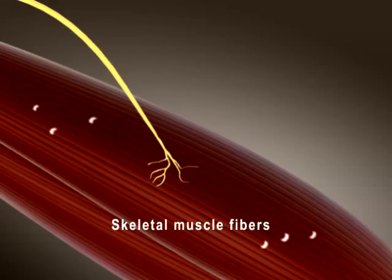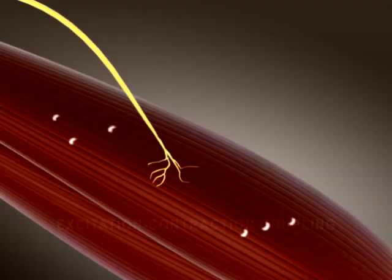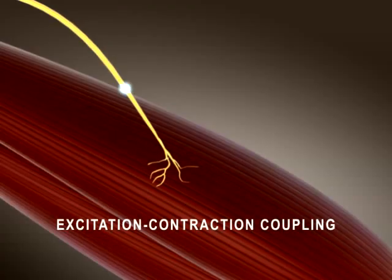The sequence of events that converts action potentials in a muscle fiber to a contraction is known as excitation-contraction coupling.